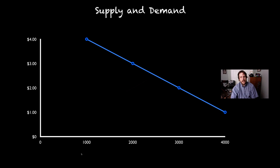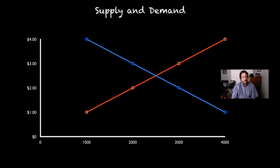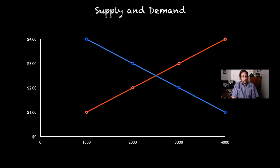Now if we take a look at our supply curve, it looks different. As the price goes up, people are willing to make more and more of that product. In our last video we talked about Brussels sprouts — at one dollar, farmers are willing to put a little bit of production into growing Brussels sprouts, but at four dollars a pound they're willing to make a lot of Brussels sprouts.